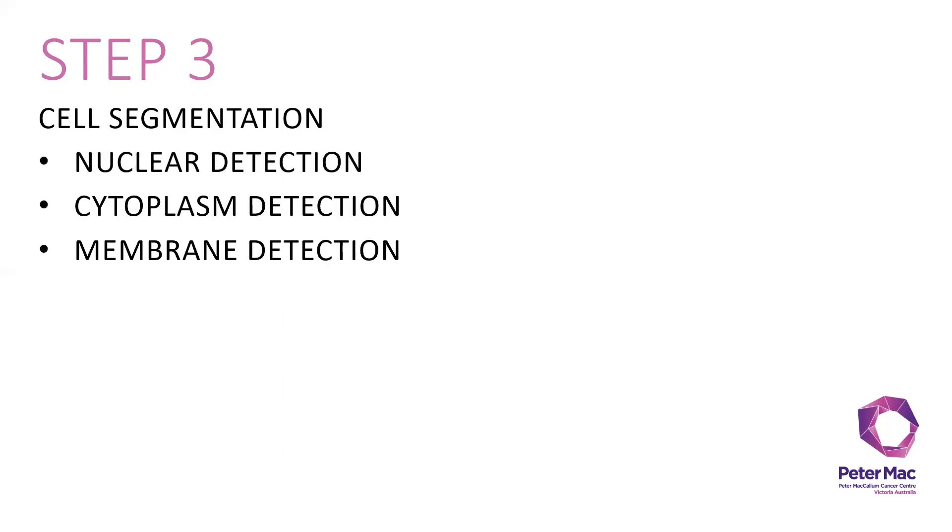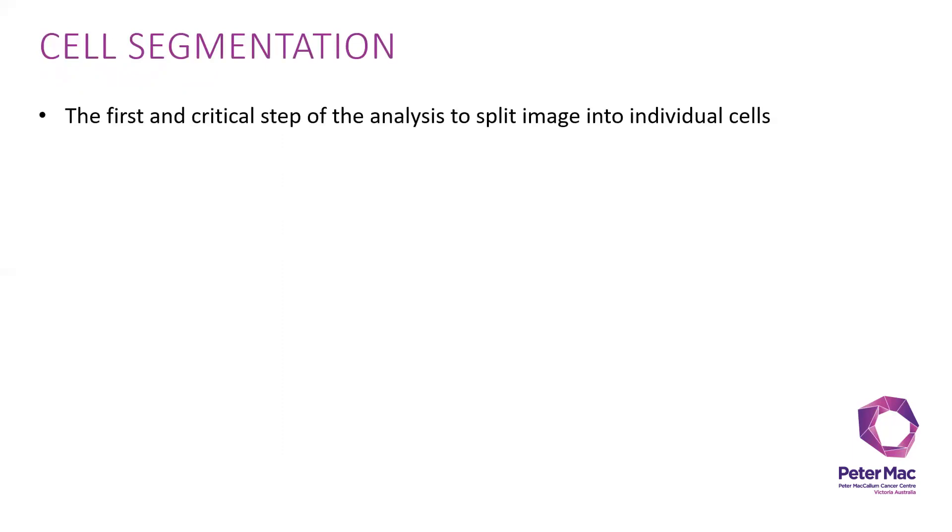After those steps, you can move on to cell segmentation, which has three different parts: nuclear, cytoplasm, and membrane detection. First, what is cell segmentation? This is the first and critical step of the analysis to split image into individual cells.